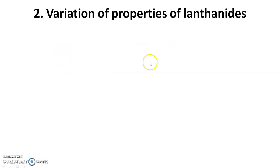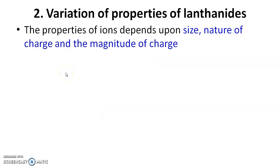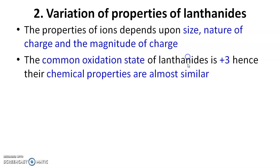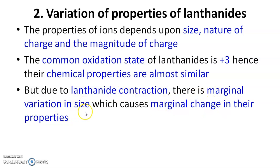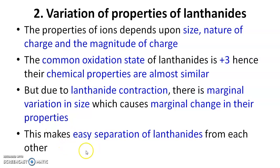The next important effect is variation of properties of lanthanides. The properties of ions depend upon the size, nature of charge, and magnitude of charge of that particular ion. The common oxidation state of lanthanides is +3, so their chemical properties are almost similar. But due to lanthanide contraction, there is a marginal variation in size which causes a marginal change in their properties.